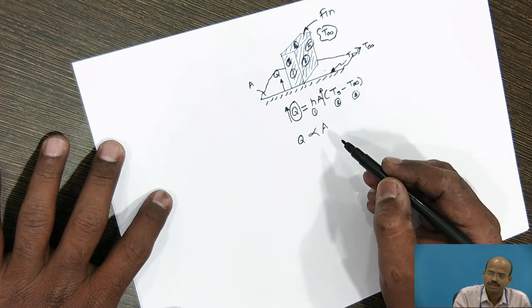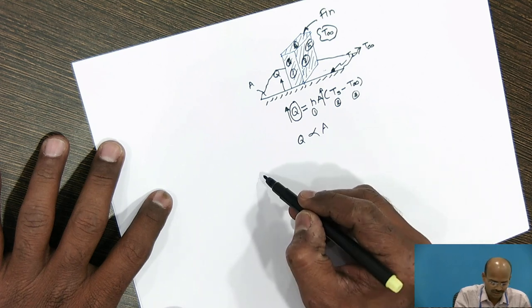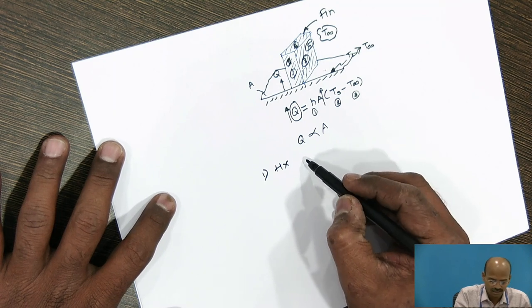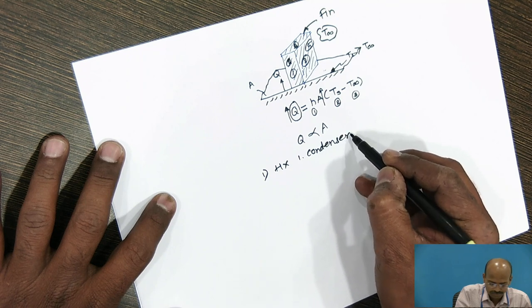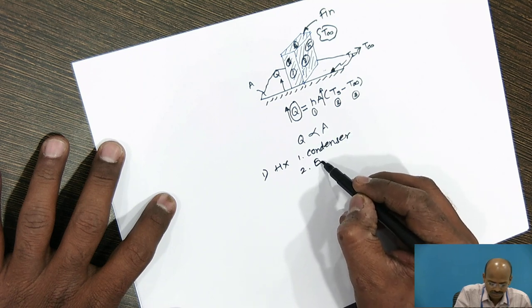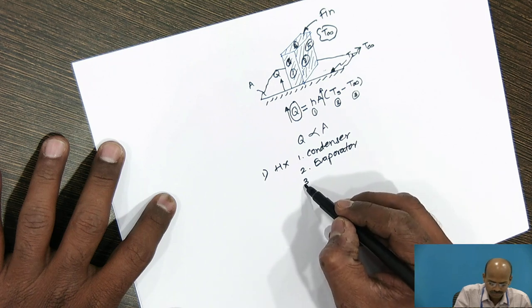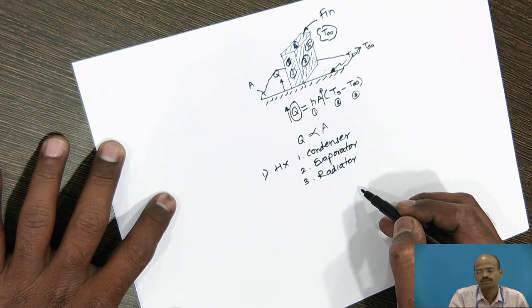Now, applications. As just now we have seen, for the heat exchanger, fins are used like condenser, second evaporator, third radiator and so on.